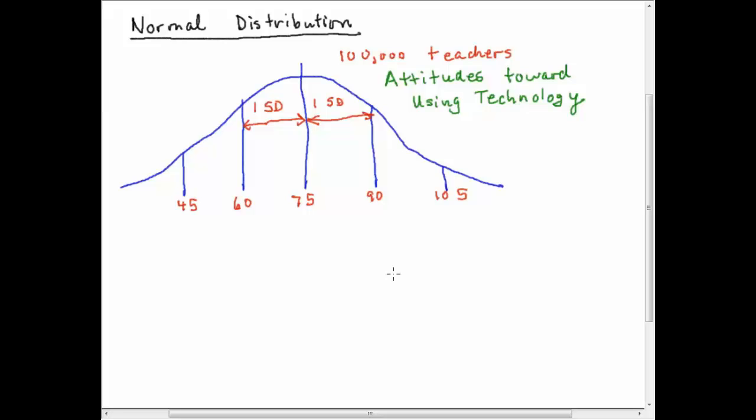So you know a little bit about the normal distribution and let's say for argument's sake we have this normal distribution and it represents 100,000 teachers. It's a little survey we gave them and the mean score was 75, which indicates pretty positive attitudes towards computers but not incredibly positive attitudes.